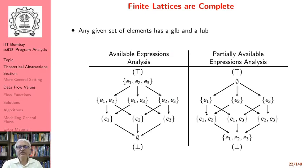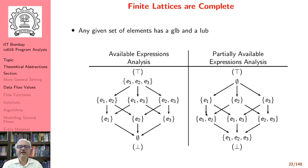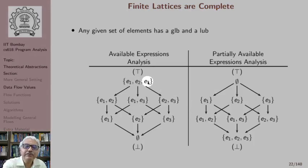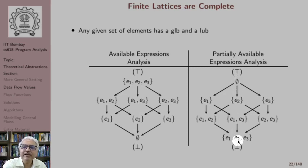Let us look at an interesting observation. All finite lattices are complete because all finite lattices do not have an infinite subset, and therefore we have a GLB and LUB defined for every possible lattice. In particular, we have used such a lattice for available expressions analysis where the top element is {e1, e2, e3} and the bottom element is the empty set.